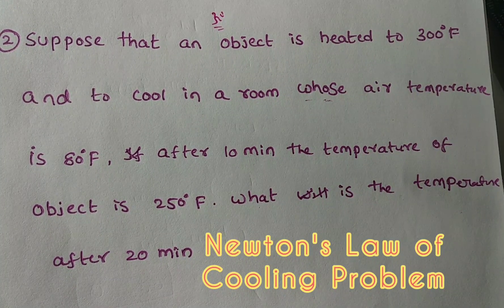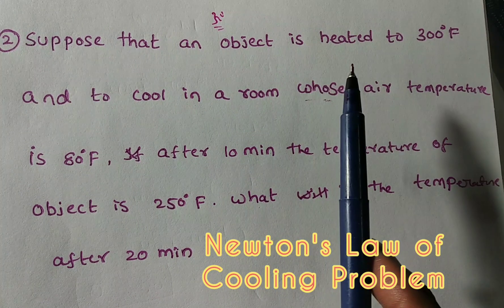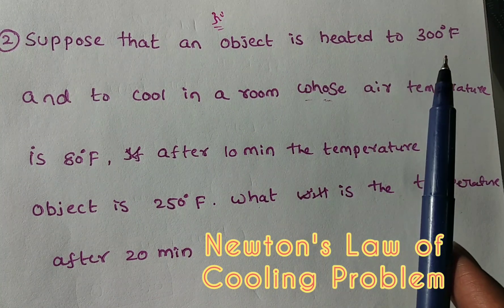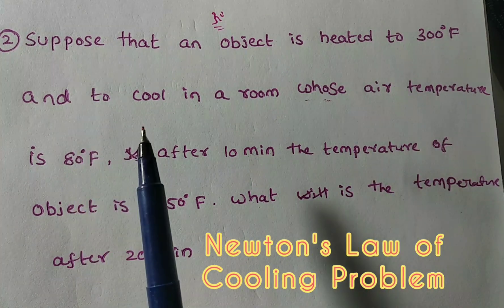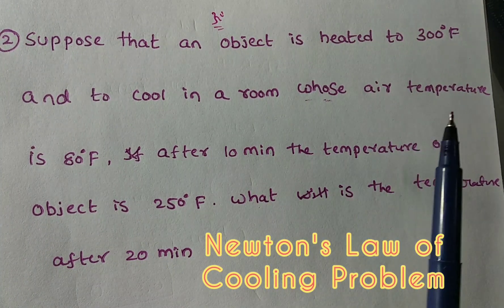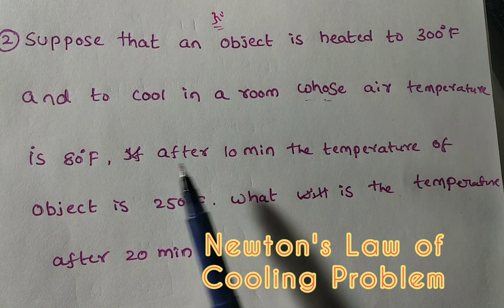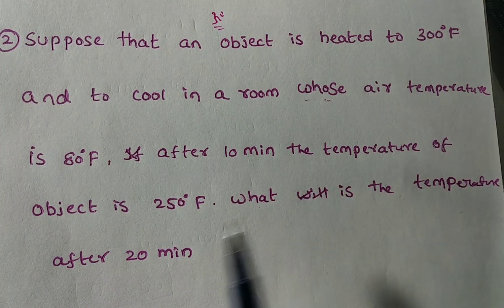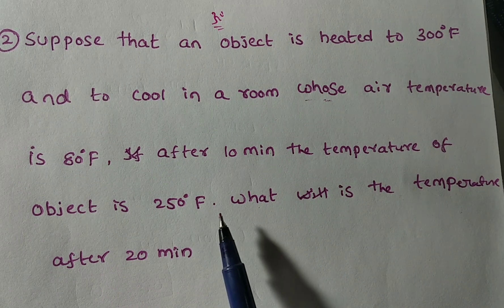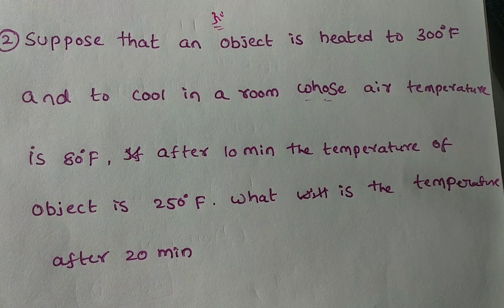Hi friends. Now we are solving an application of Newton's Law of Cooling problem. Suppose that an object is heated to 300 Fahrenheit and allowed to cool in a room whose temperature is 80 Fahrenheit. After 10 minutes, the temperature of the object is 250 Fahrenheit. What is the temperature after 20 minutes?